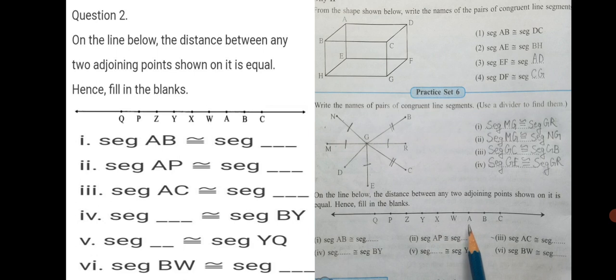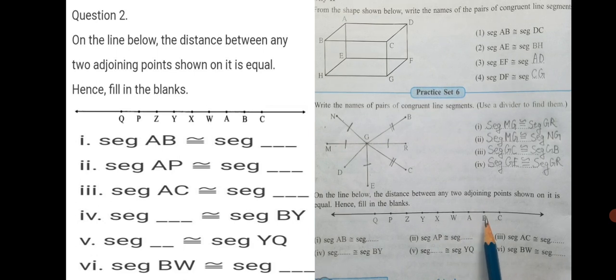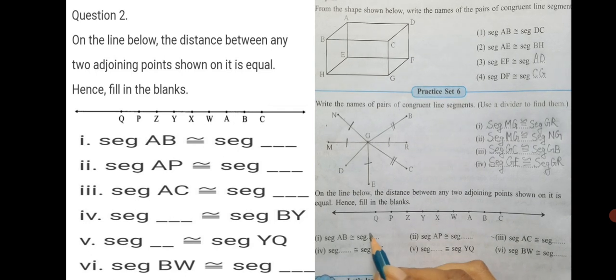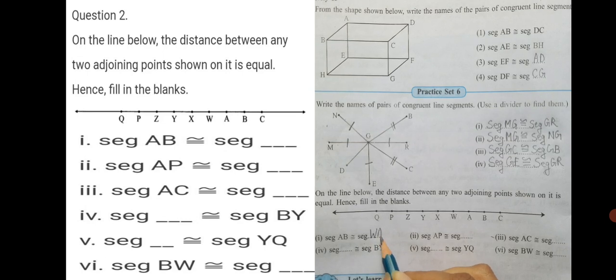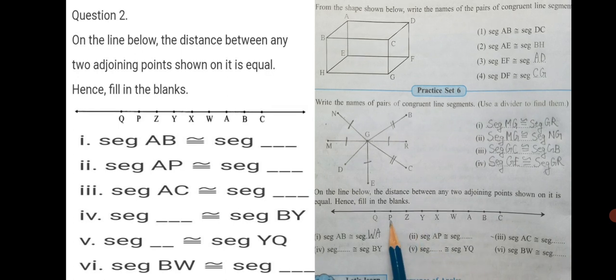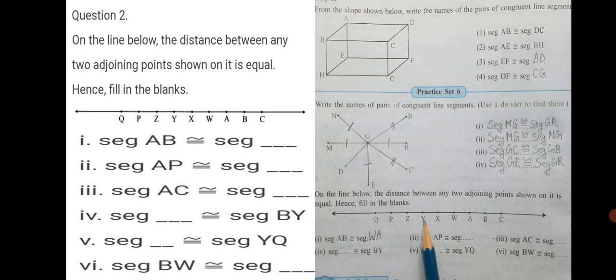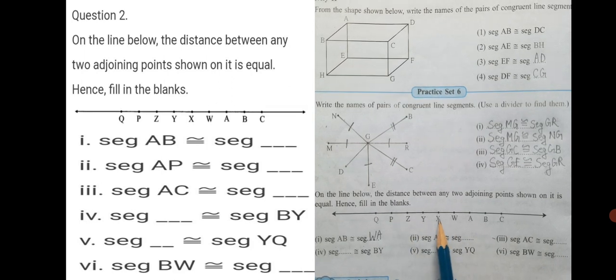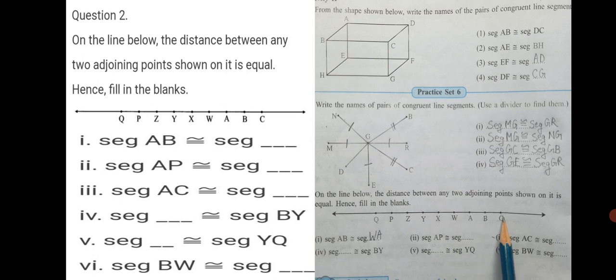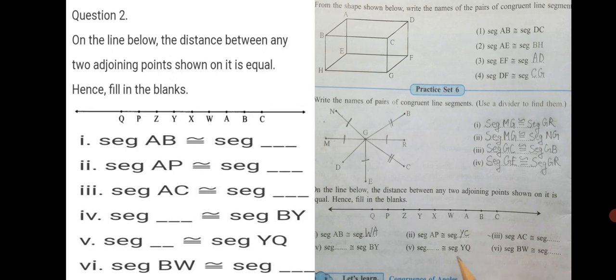Let's take WA, which is just next to it. We will write seg AB is congruent to seg WA. Now, seg AP. Let's count. 1, 2, 3, 4, 5, 6. 6 points have to be covered. We can start from, say, Y. 1, 2, 3, 4, 5, 6. Y, C. Seg AP, we can write congruent to seg YC.